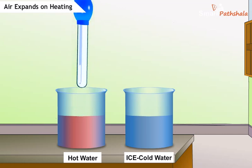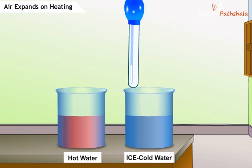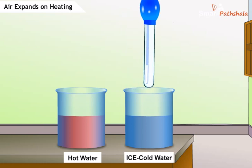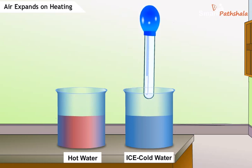Take the tube out and let it cool down to room temperature. Take some ice cold water in another beaker and place the tube with the balloon in cold water for 2-3 minutes. Observe the change in the shape of the balloon.